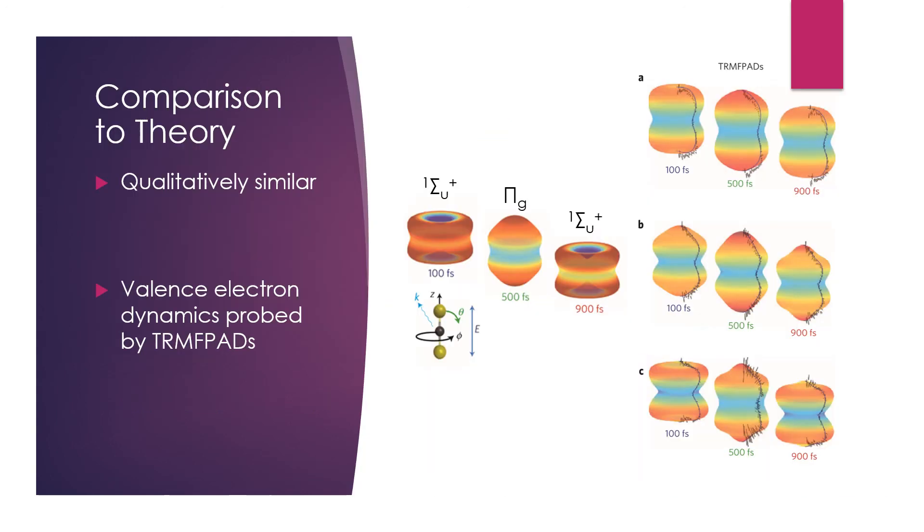Finally, here's what the angular distributions look like projected in 3D. At propagation times of 100 femtoseconds, the angular distribution shows the 1Σu+ electronic character. At 500 femtoseconds, the angular distribution shows the πg electronic character. And at 900 femtoseconds, the 1Σu+ electronic distribution has reappeared. This propagation matches what we've discussed previously with the fluctuations along the z-axis.